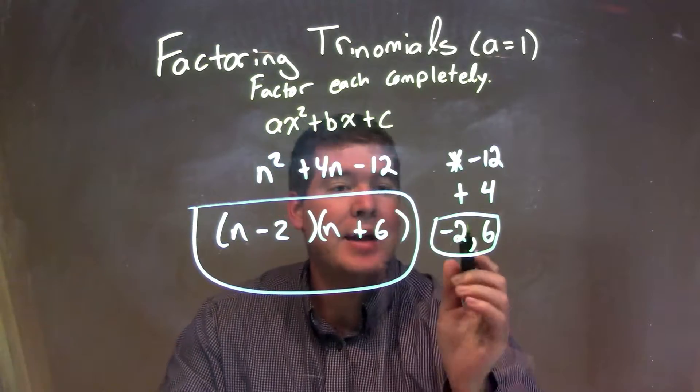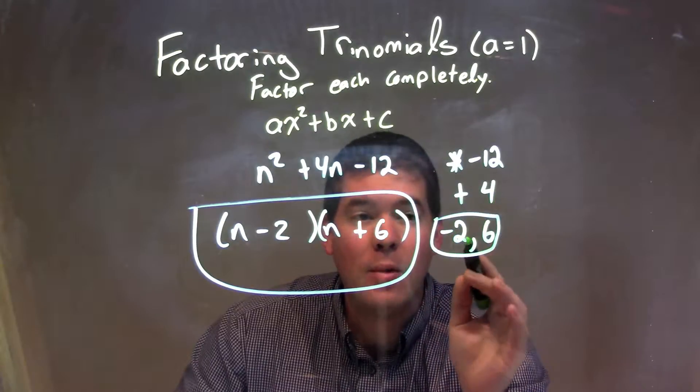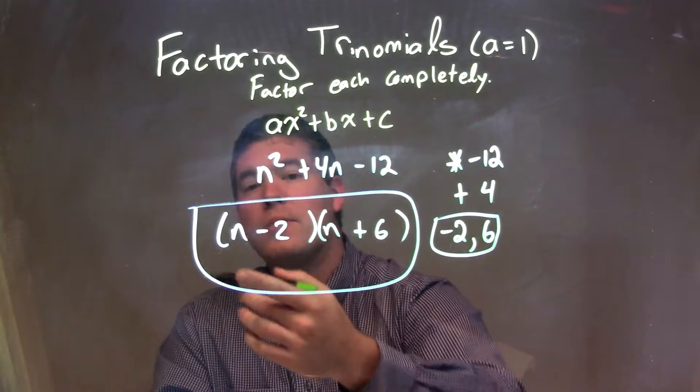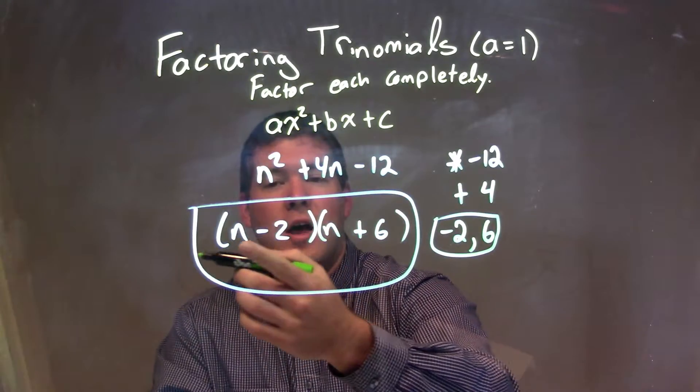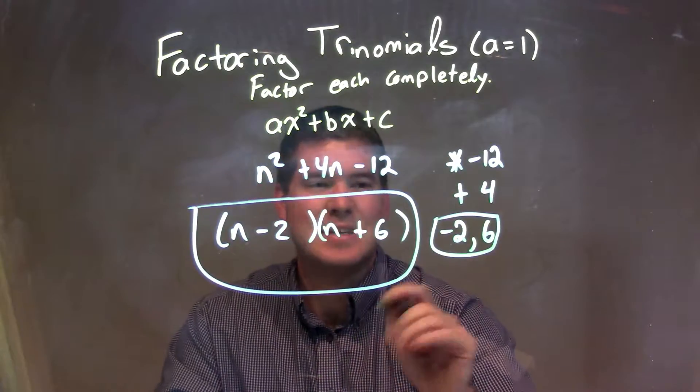We got -2 and +6. -2 times 6 is -12, but -2 plus 6 is a positive 4. So when I wrote that in factoring form, I have n and then my first number -2, so (n - 2) times the second number (n + 6).